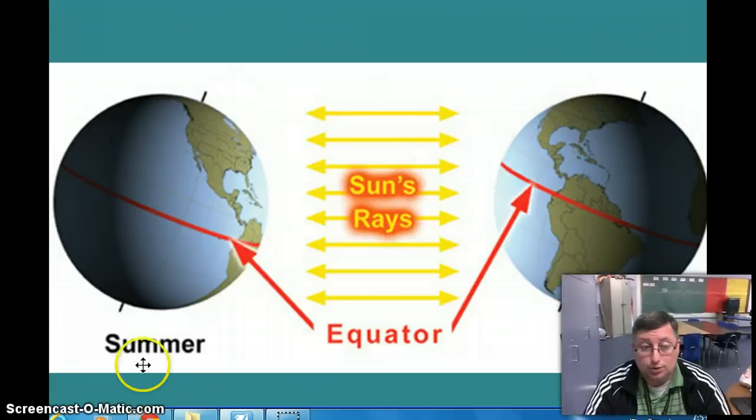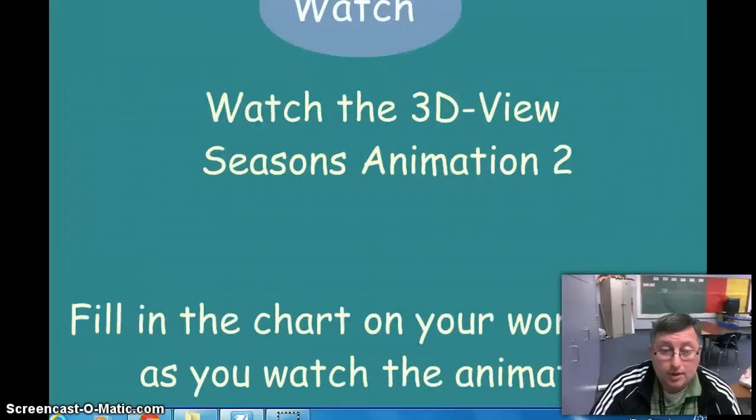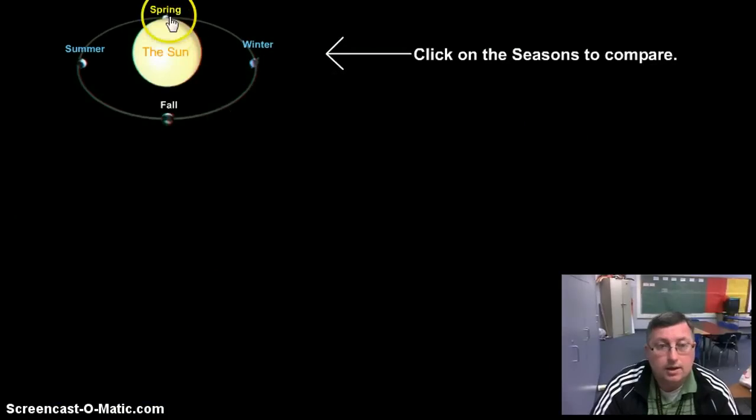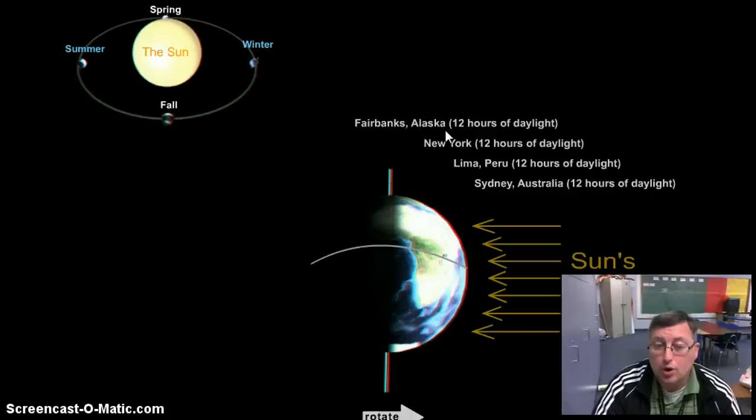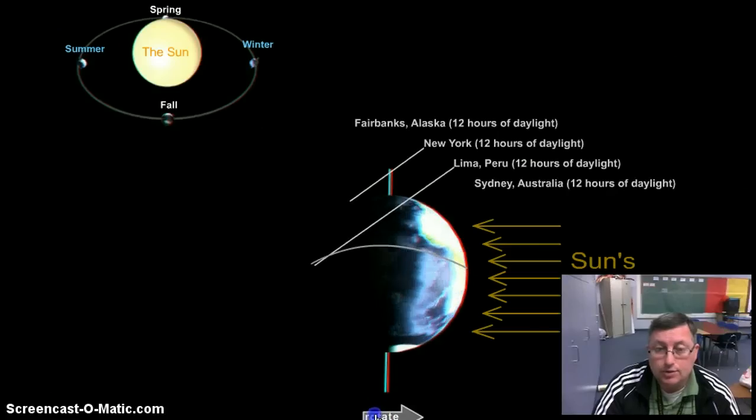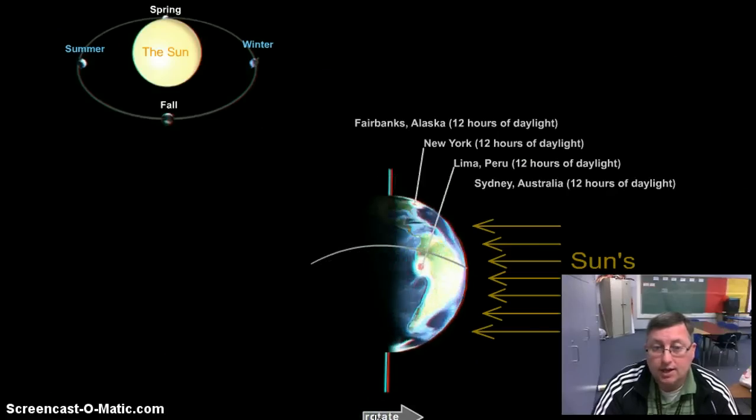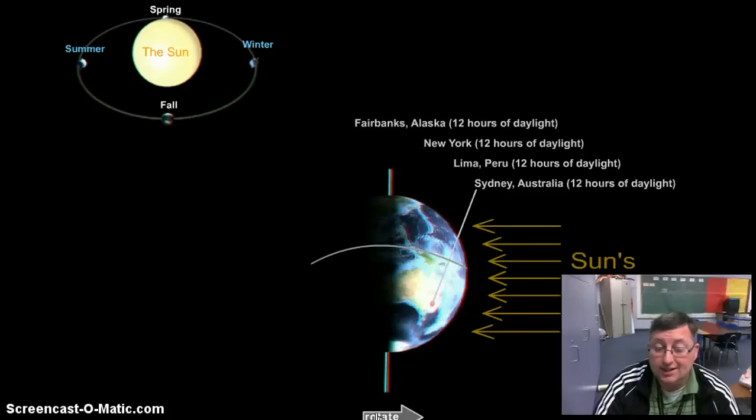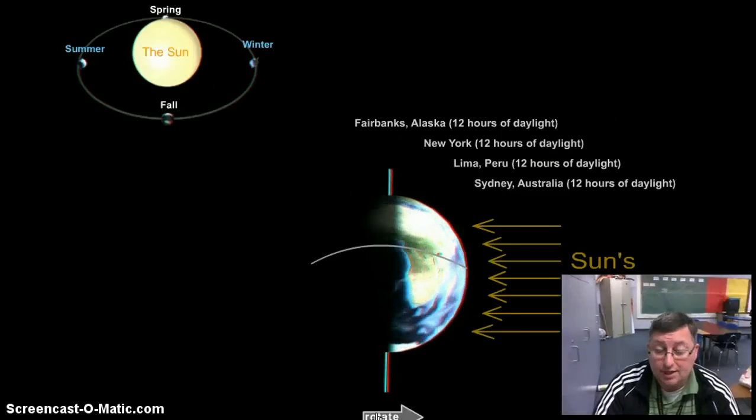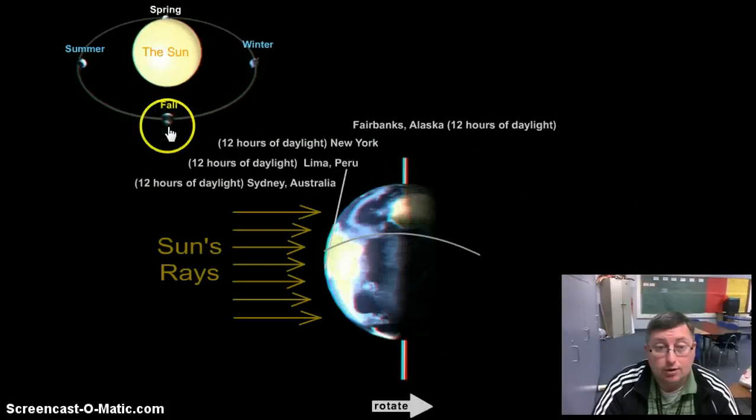Now if you watch this video, and if we click on spring, this is what it looks like. Fairbanks, Alaska, 12 hours a day. If I rotate the Earth, you can kind of see everybody gets about 12 hours of daylight and 12 hours at night in spring, in March on the 21st. If I go to fall, it does the same thing except we're just tilted differently. Same place, the same amount of sunlight.